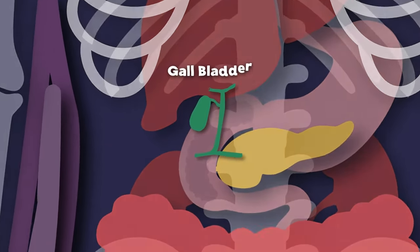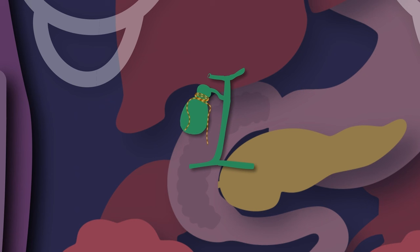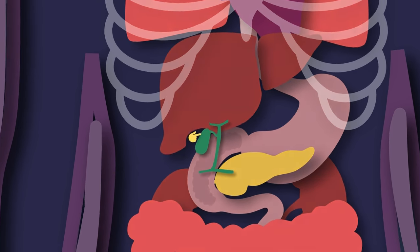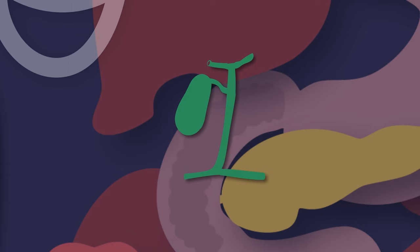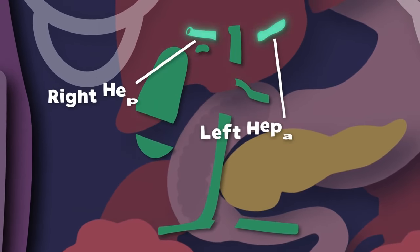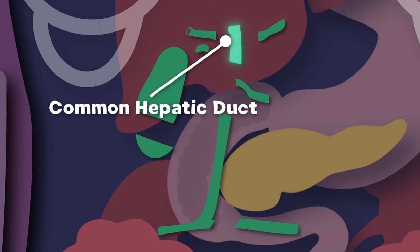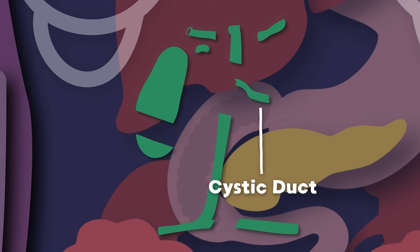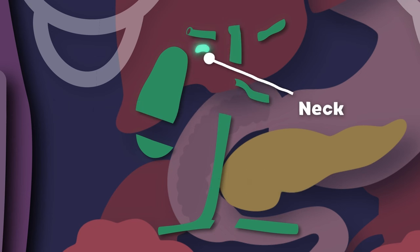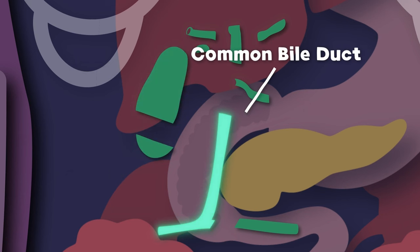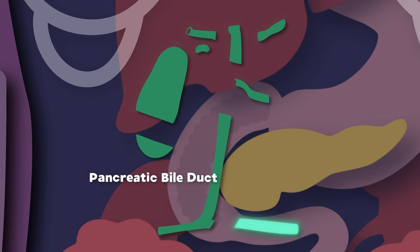I am your gallbladder. I am a sac-shaped organ, you see. I am a gallbladder. Your liver stores its bile in me. My surface is smooth to the touch. I am green in color, now you know that much. And I have several parts. The right and left hepatic ducts are where we will start. Here's the common hepatic duct. Then the cystic duct sits where it is tucked. Then we move to the neck, which is attached to the body and the rounded fundus, to the common bile duct and the pancreatic duct.